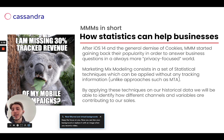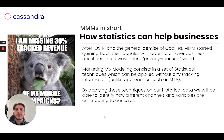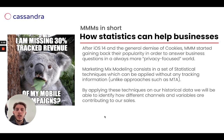Then cookies made it really easy for us to know everything our users did on our platforms. But since lately, in the past year mainly, all companies are starting to get more privacy-focused, and we've really lost a lot of tracking capability. So marketing mix models are getting back into the business. They consist of a set of statistical techniques which can be applied without any tracking information, unlike approaches such as MTA or multi-touch attribution.